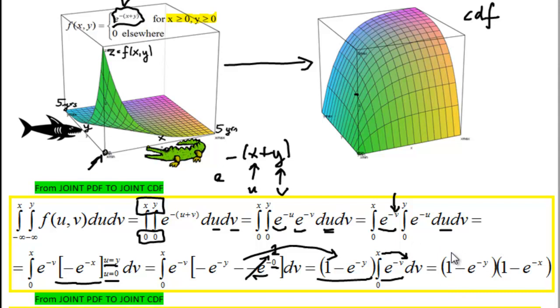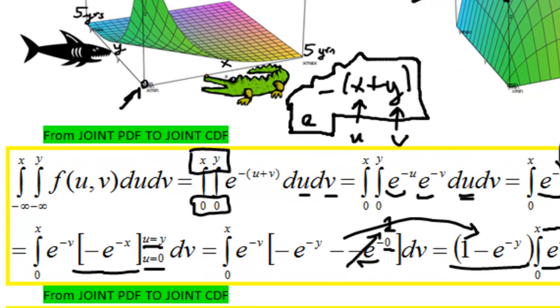So we get this as our joint cumulative distribution function. Victory at last. We can use this function directly to find probabilities. We could not have used this joint PDF to find probabilities. We have to perform this transformation from joint PDF to joint CDF in order to do something meaningful with this function.